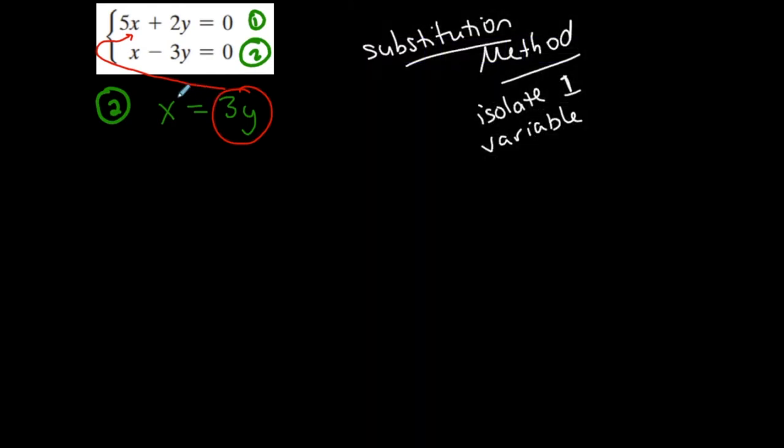Substitution - if I can say that x is equal to 3y, then if I write x, it's the same thing as writing 3y. So now I used equation 2 to represent this situation and isolate x. I'm going to use equation 1 to do my substitution. 5 times x, which is now 3y, plus 2y is equal to 0.